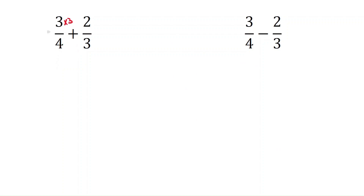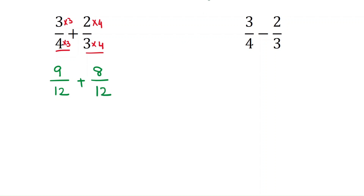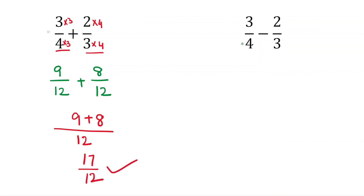First, convert the given fractions to equivalent fractions. If you multiply 3/4 by 3/3, and 2/3 by 4/4, the denominators become 4×3=12 and 3×4=12 — we are making the common denominator. That gives us 9/12 + 8/12. Now the denominators are the same, so taking the common denominator gives 9 + 8 = 17, so the answer is 17/12.